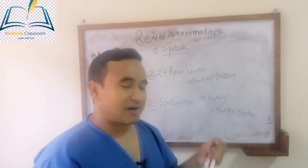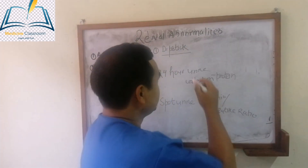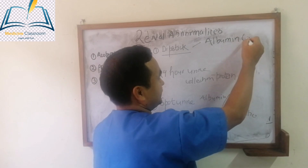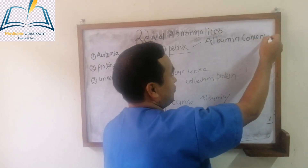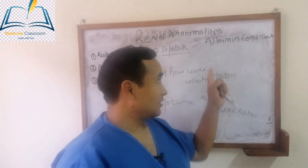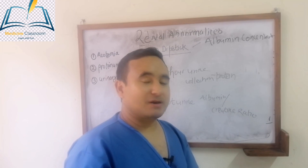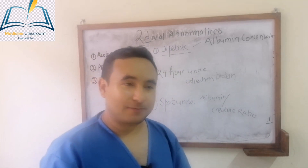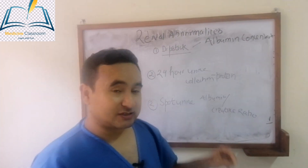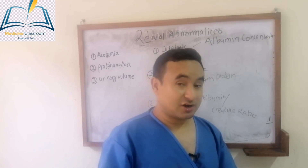In routine clinical practice we just do the dipstick. Remember, students: the dipstick can only detect albumin concentration. So if there is proteinuria other than albumin — like light chain proteinuria in the case of multiple myeloma — this type of protein cannot be detected by the dipstick technique. That's why sometimes it is not reliable. This is one of the MCQ points: dipstick can only detect albumin, and it detects concentration.